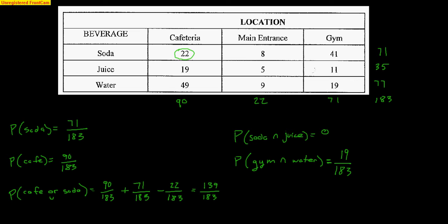Okay, next up we could do some conditional probabilities. I'm going to grab a different color here. So a conditional probability would be, what's the probability you bought a soda on the condition you use the gym? Okay, now the idea here is I'm going to use my conditional probability formula. On top goes soda and gym. Soda and gym. 41 students out of 183 were soda and gym. The denominator is just the gym.